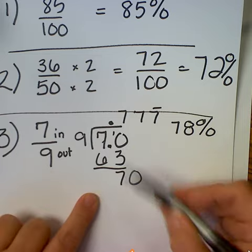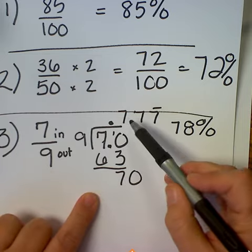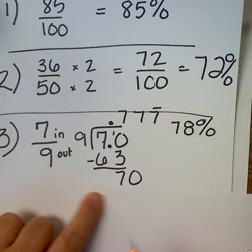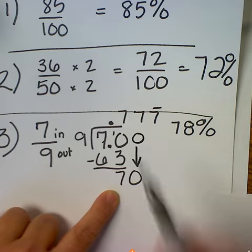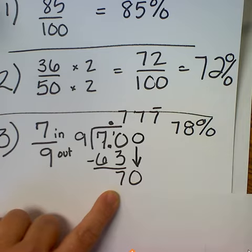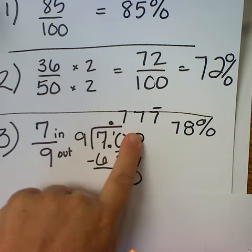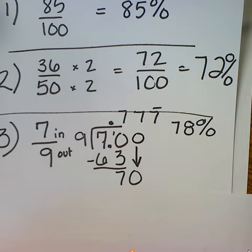9 goes into 70, 7 times. 7 times 9 is 63. You subtract and you get 7, and you can bring down another 0, which again is 70. So we're going to end up with 0.777 repeating, and you can round that to 78.